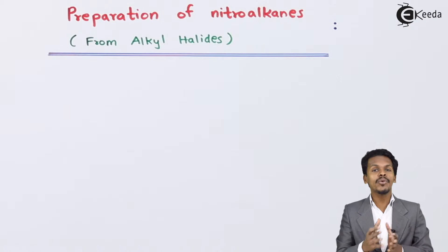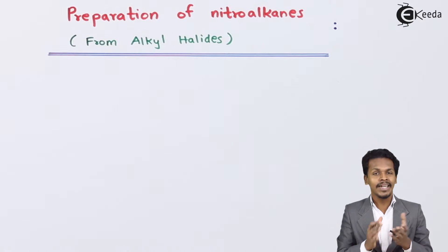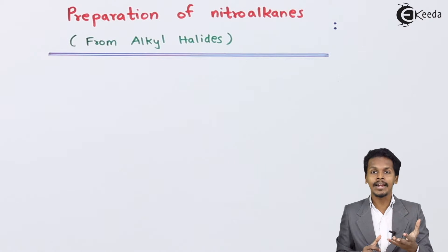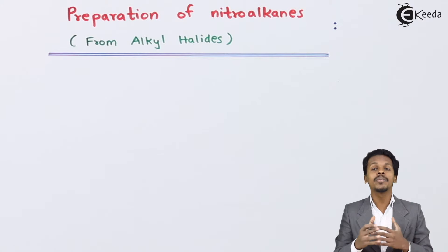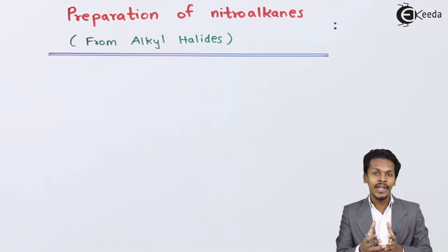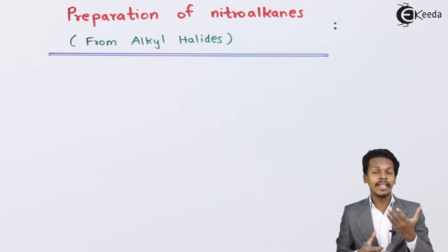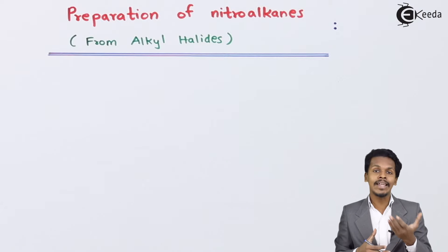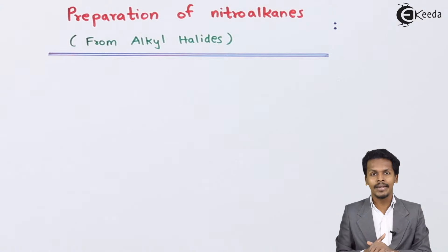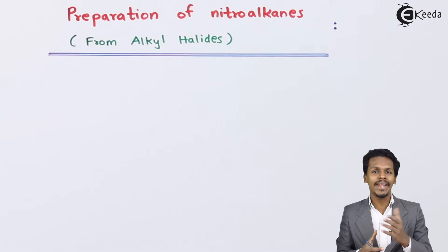Here we are going to convert alkyl halide into nitroalkane. We can use different reagents for this. The first one is silver nitrite (AgNO2) — reacting an alkyl halide with silver nitrite gives a substitution reaction and the corresponding nitroalkane is obtained. We can also use sodium nitrite (NaNO2), which similarly gives a substitution reaction yielding nitroalkane.